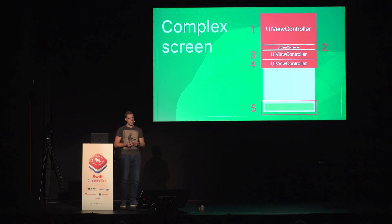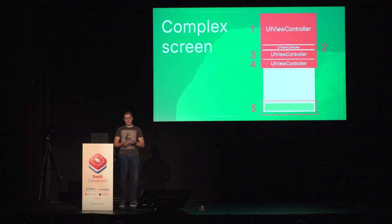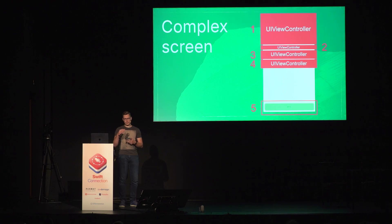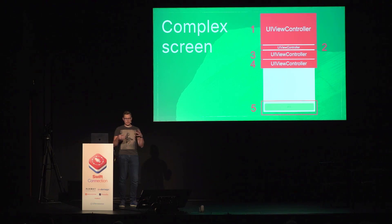What child view controllers also give you is access to the navigation stack. You can also navigate deeper — for example, you have those items, you can click on them, and from that items view controller you can show the item page and so on. So you also have navigation embedded.